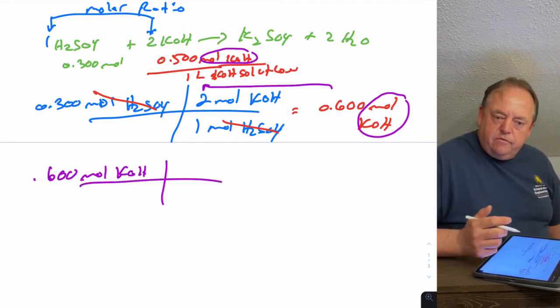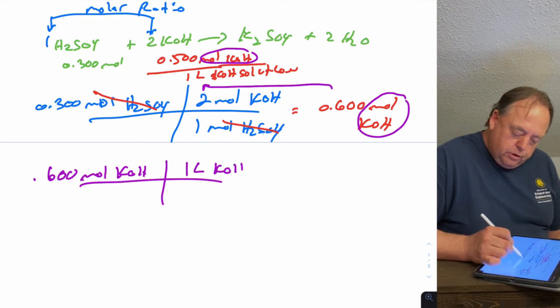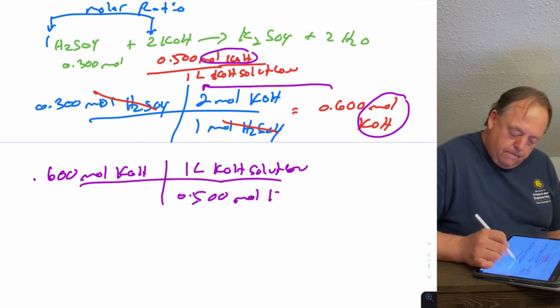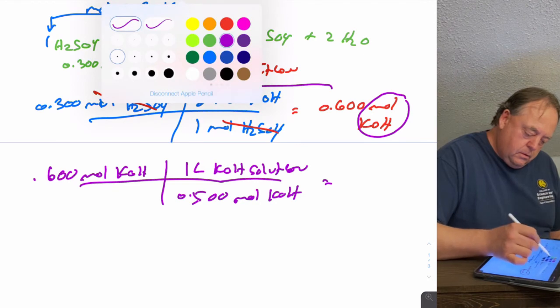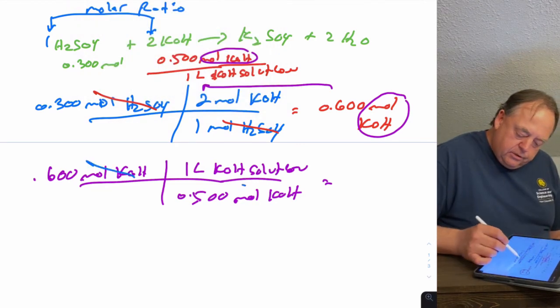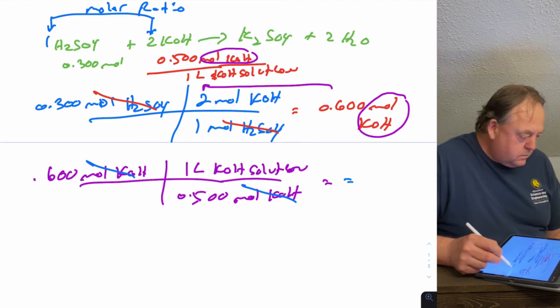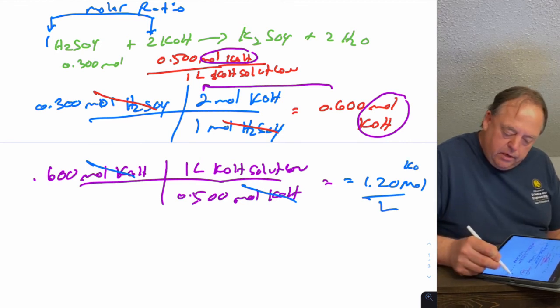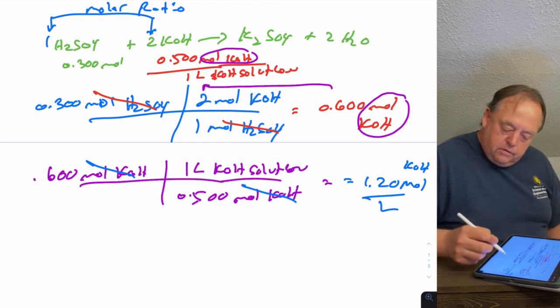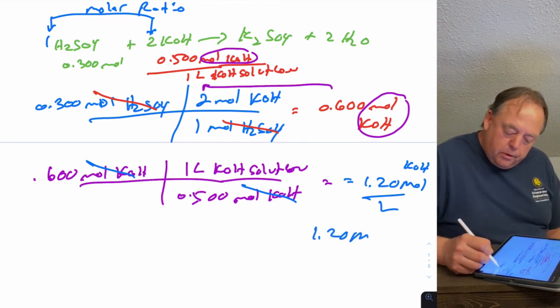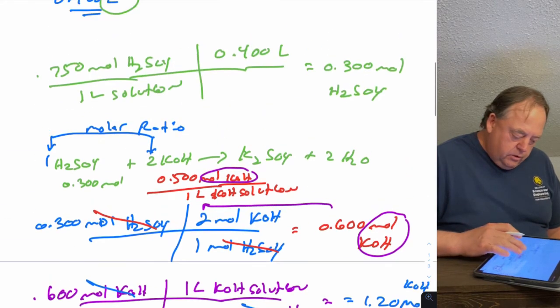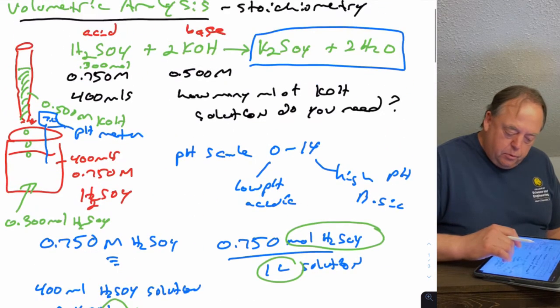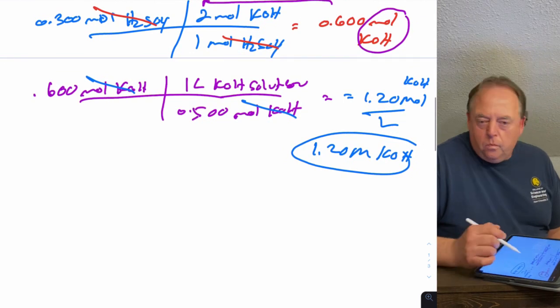So 0.600 mole of KOH, now we need to take the inverse of the molarity: there's one liter of KOH solution per 0.5 moles. So then moles of KOH cancel out, and that gives you 1.2 liters. The solution that you're dripping in from the burette, the KOH, since it's 0.5 molar, you're going to end up needing 1.2 liters of KOH solution.